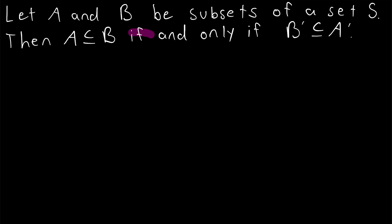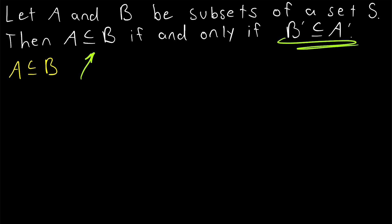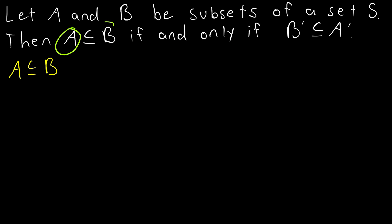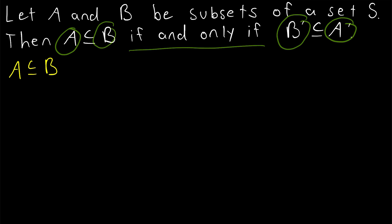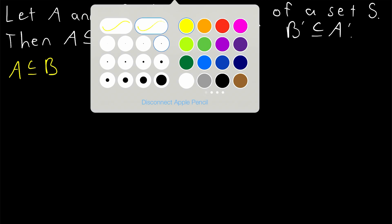Notice this is an if and only if theorem, so we'll have to prove two directions. First, we will assume that A is a subset of B and use that assumption to prove that B complement is a subset of A complement. Then we'll do the other direction. Another way to say this result is that everything in A is in B if and only if everything not in B is also not in A. But let's just get into the proof.